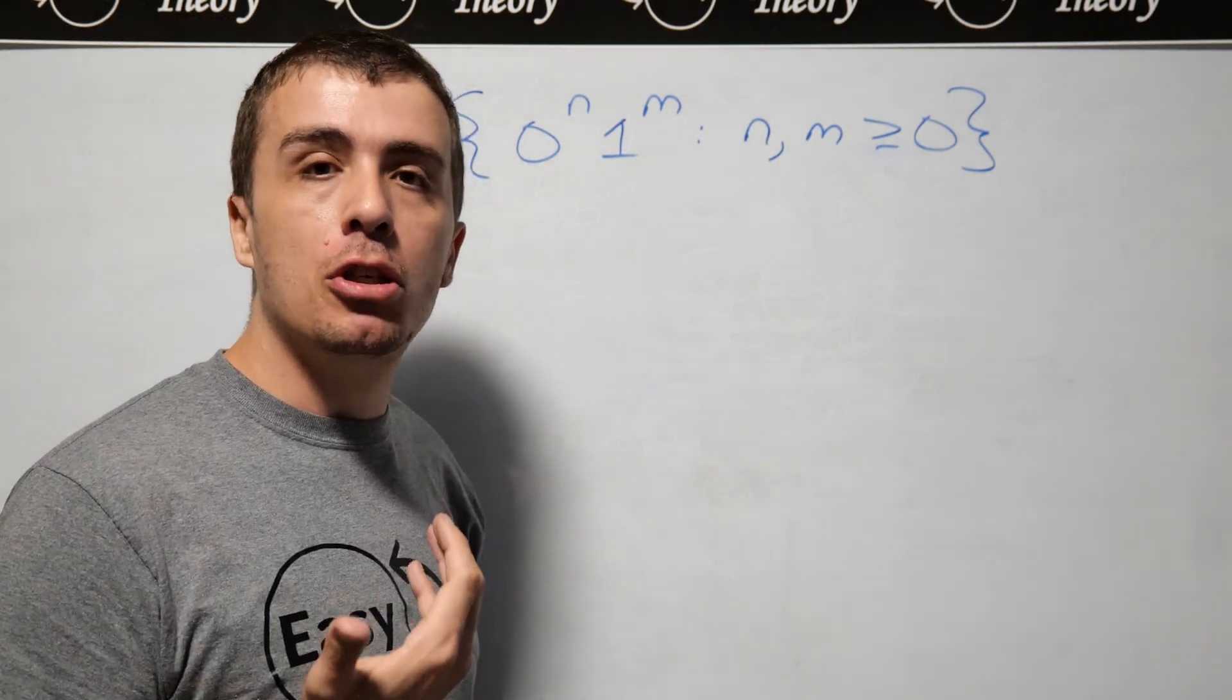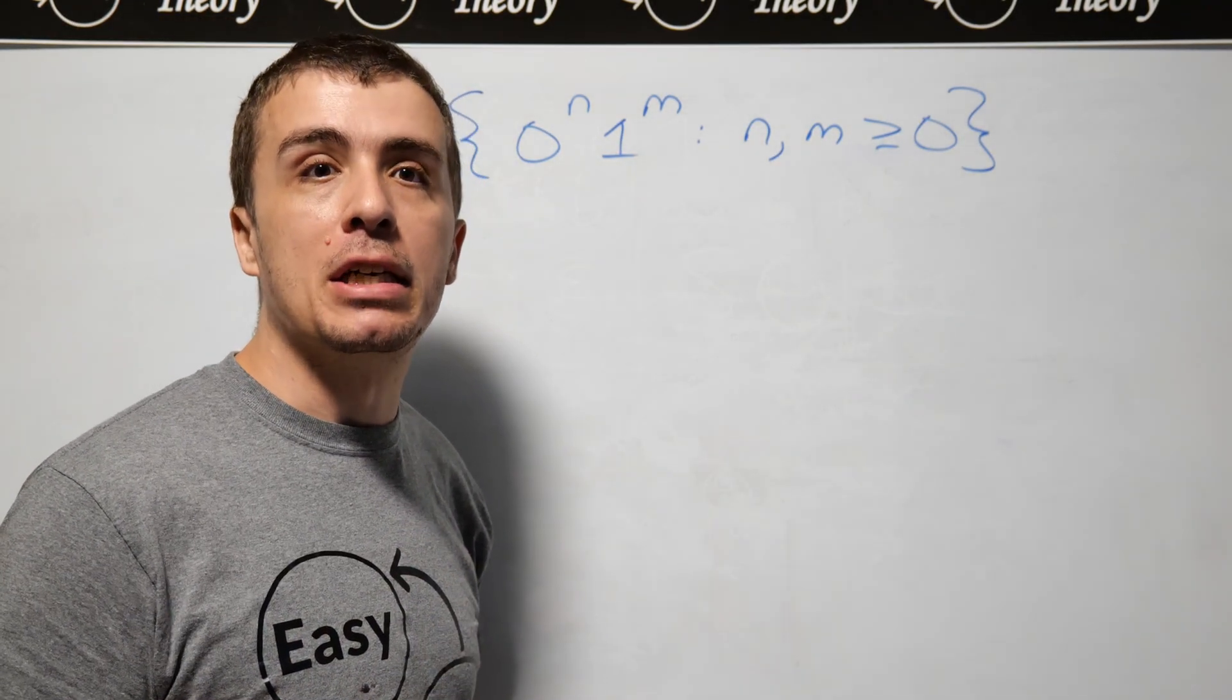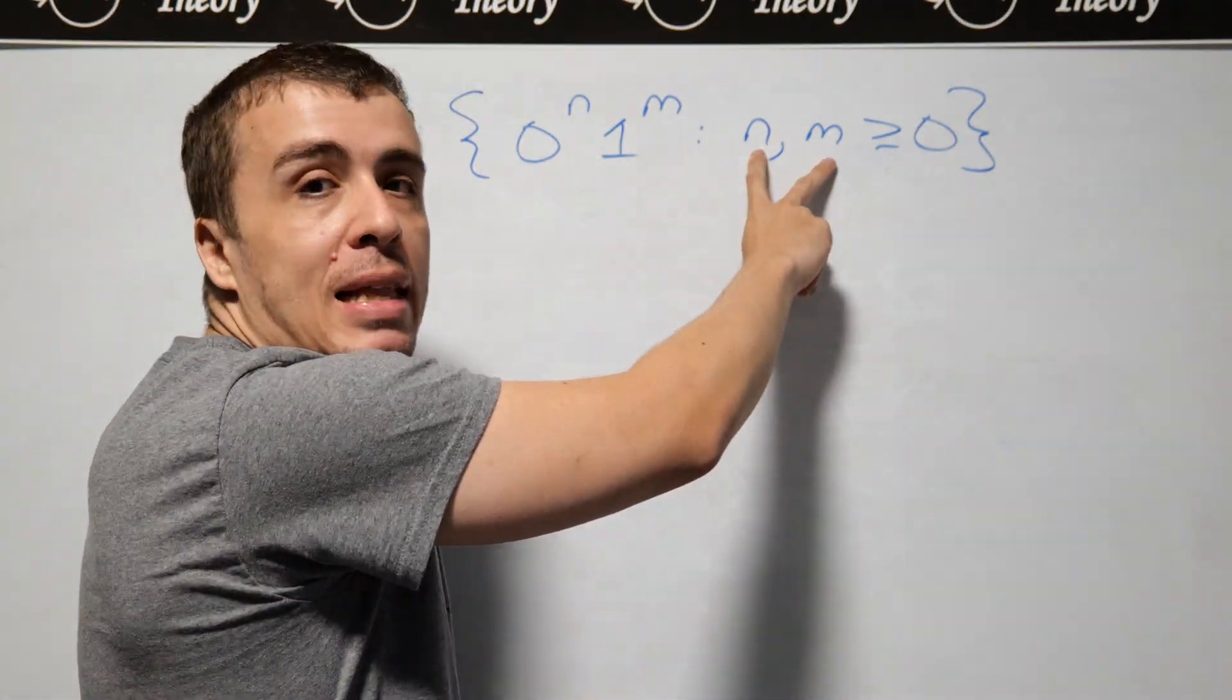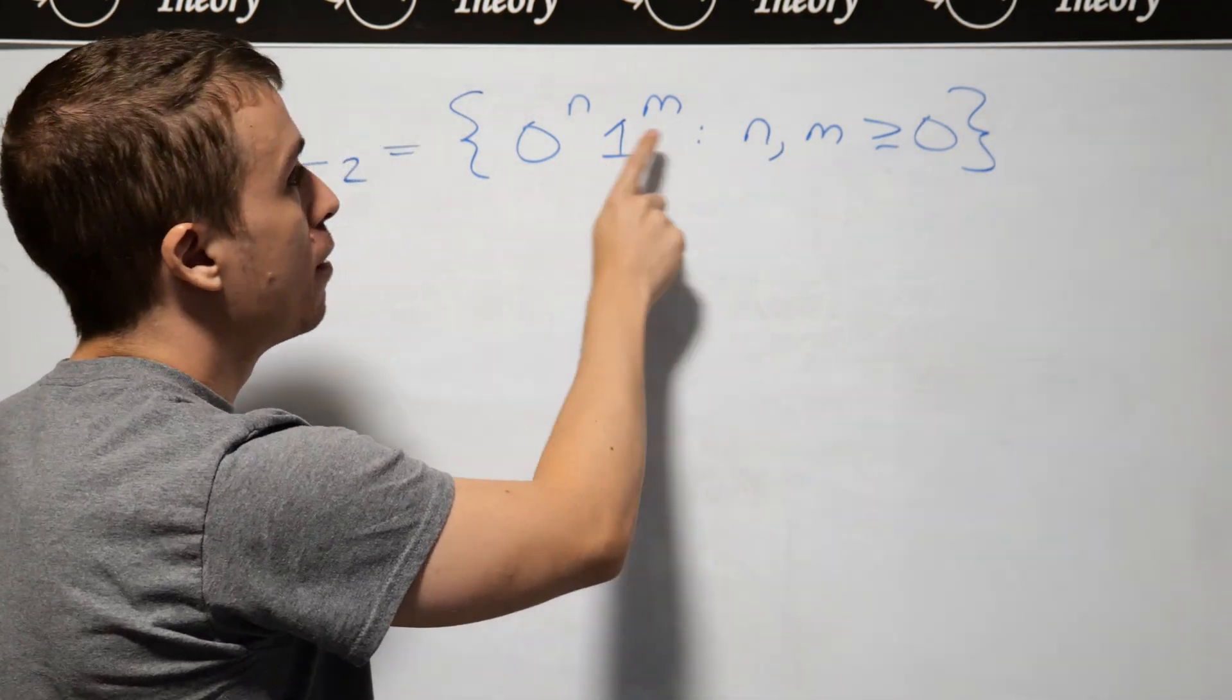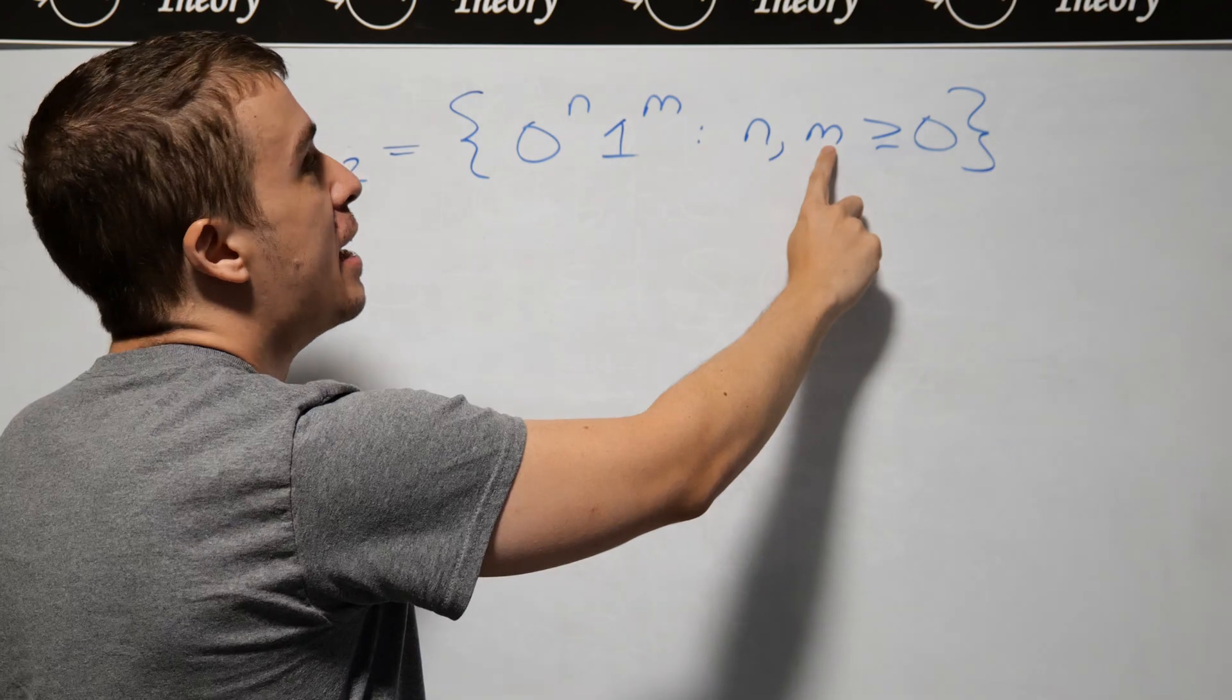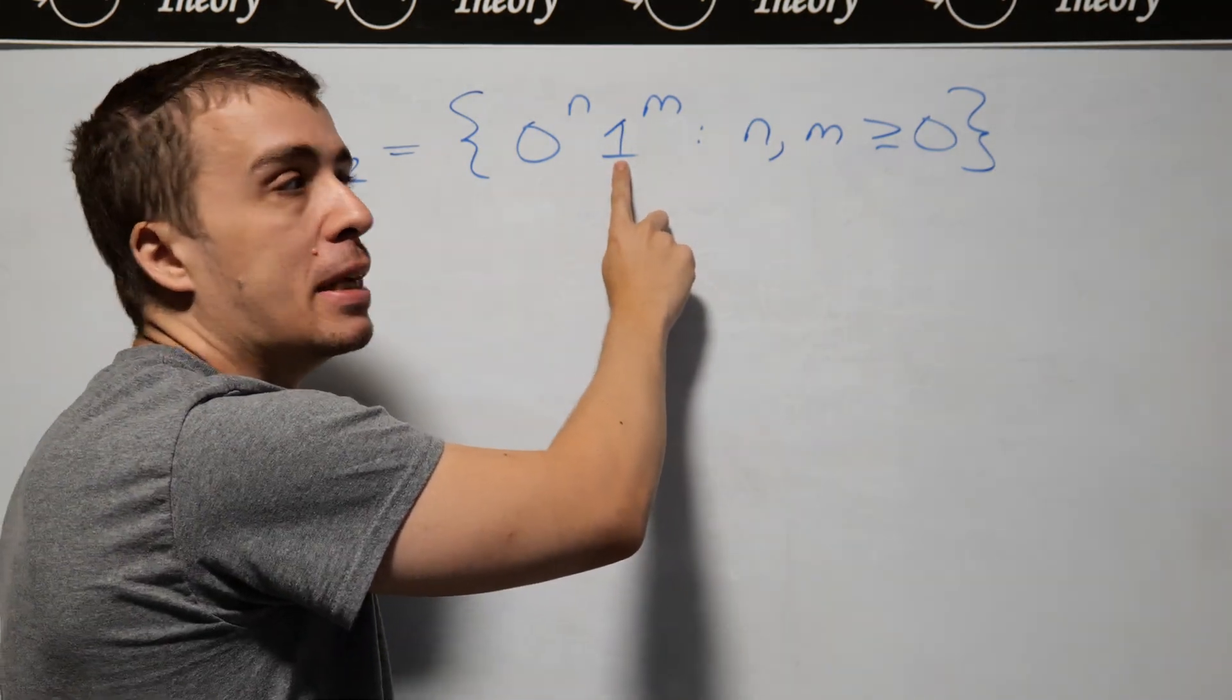One thing that you should be aware of when making a context-free grammar for a language is what are the relationships between the counts here. So the count n here is the number of zeros, and m is the number of ones.